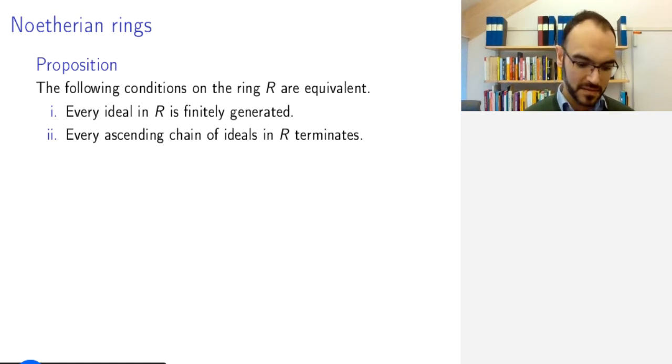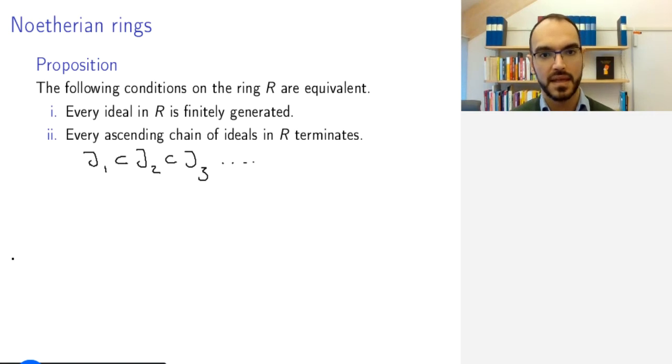The second condition says that every ascending chain of ideals in R terminates. This is the ascending chain condition. What does this mean? Assume you have ideals J1 included inside J2, included inside J3, and so on.